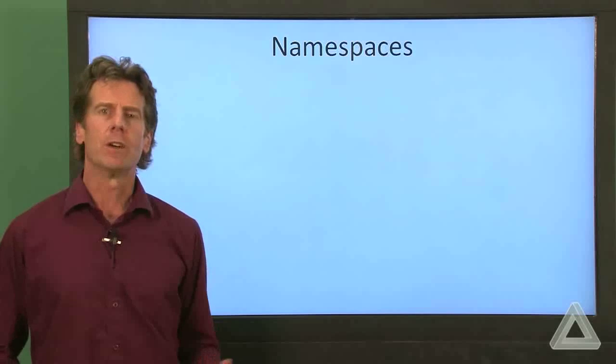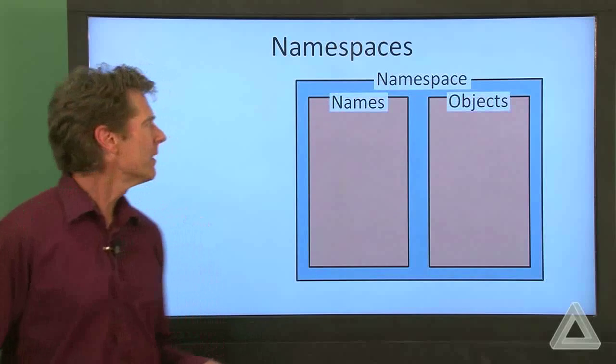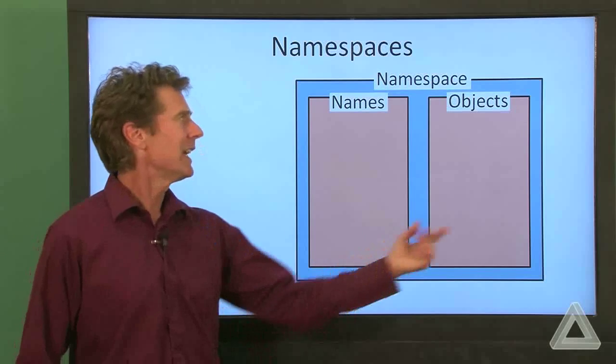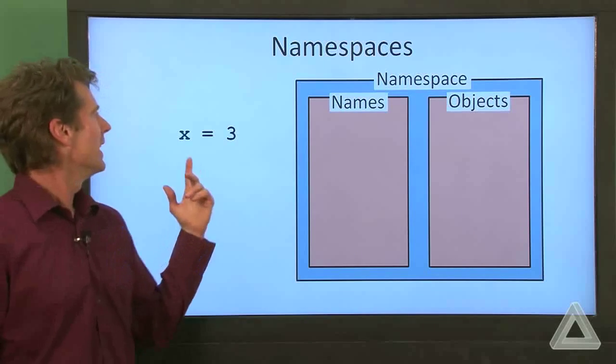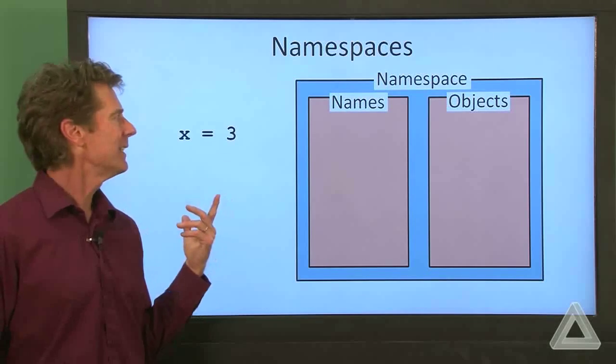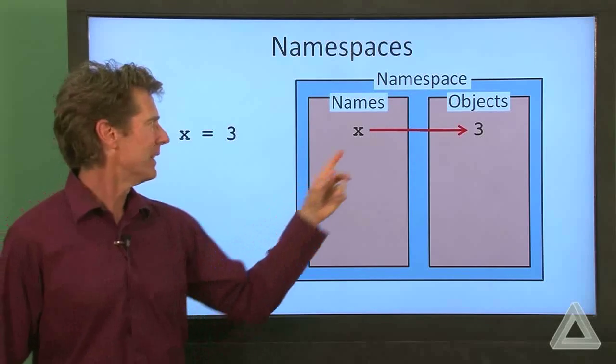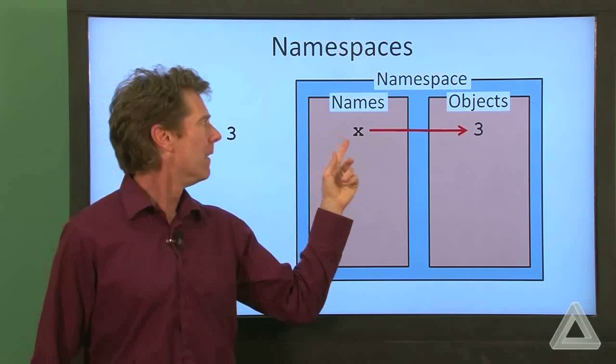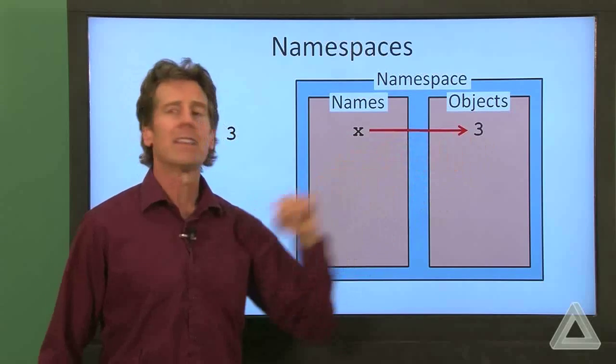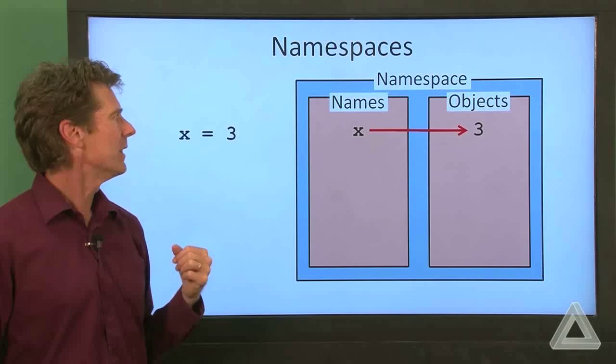Let's give another example of what goes on in a namespace. So here is a namespace, the list of names, list of objects. We have an assignment statement, x is equal to 3. And I'll write the arrow in red this time that's telling us that the value of x is 3. So 3 is associated with x.